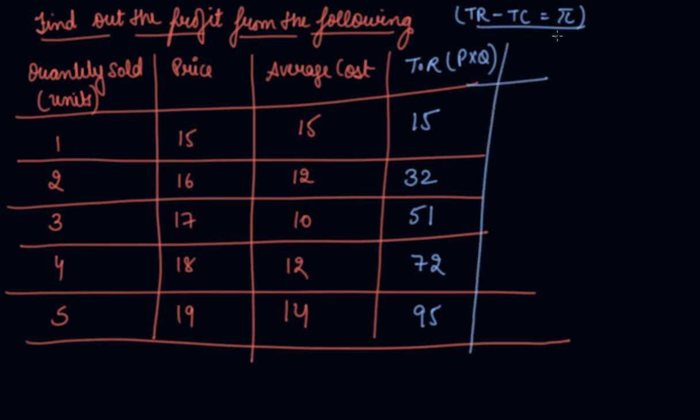Now we can find out the total cost as well. The average cost is given to you, and your average cost is equal to your total cost divided by quantity. So if you multiply the quantity with average cost we get total cost. Average cost is 15, quantity is 1, so it's 15. Then 24, 30, 48, 60.